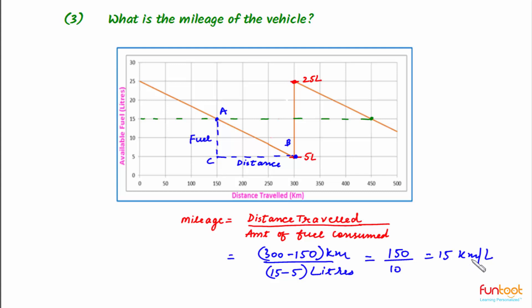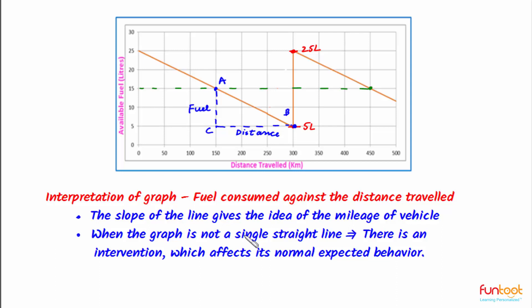So the mileage of the vehicle is 15 km/liter. In this problem, we interpreted the graph of fuel consumed against distance traveled. The slope of the line gives the idea of the vehicle's mileage, and when the graph is not a straight line, this implies there is an intervention which affects its normal expected behavior.